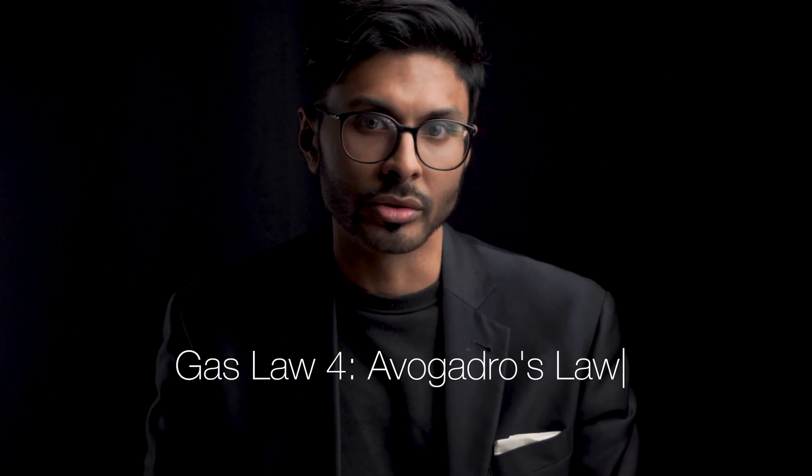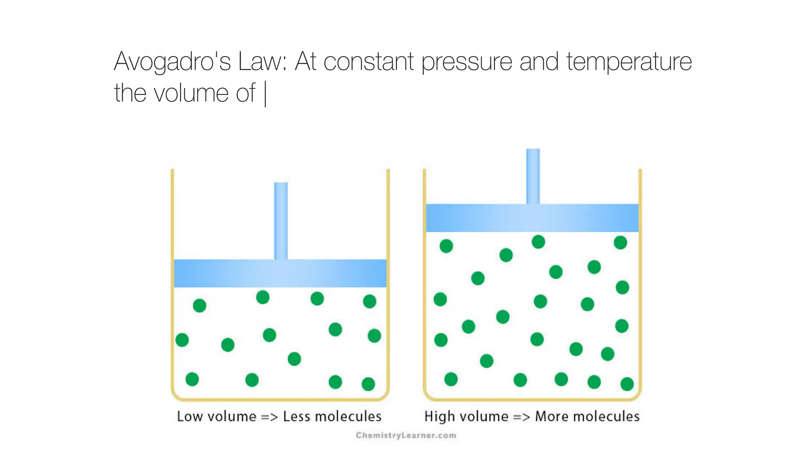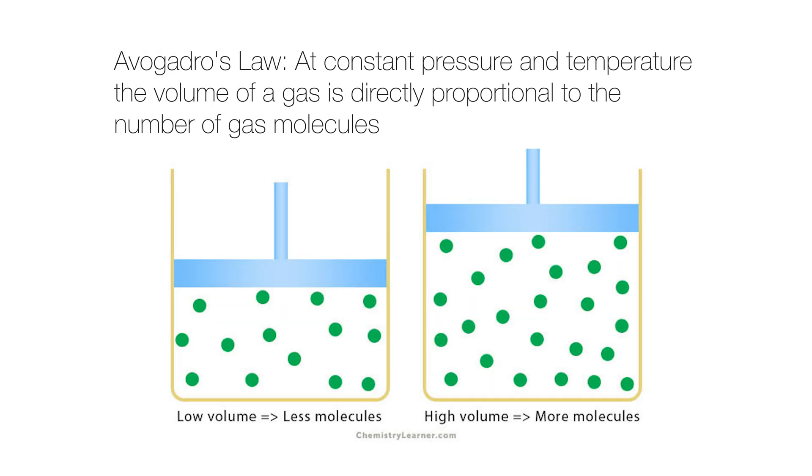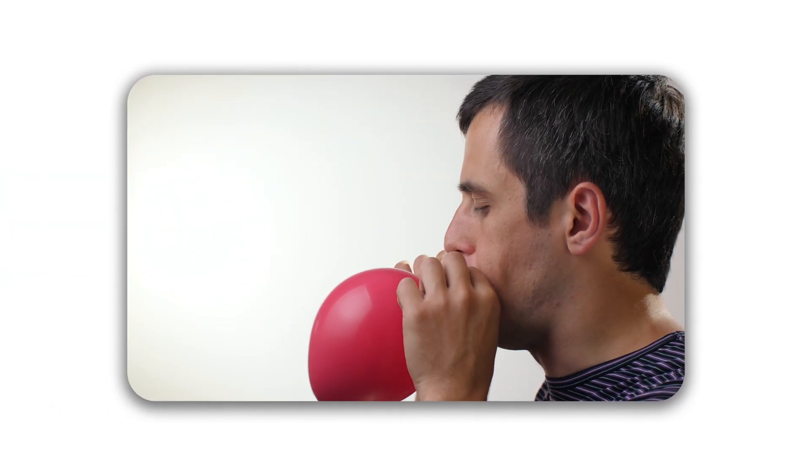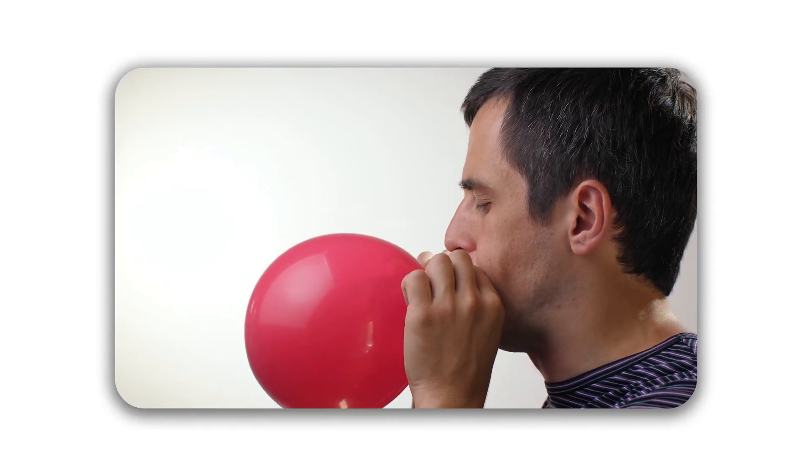The fourth law is Avogadro's Law, which relates volume and the number of gas molecules. At constant pressure and temperature, the volume of a gas is directly proportional to the number of molecules — add more gas molecules and you need a bigger container for the pressure to stay the same. Blow more air into a balloon and it expands while staying the same pressure. In the respiratory system, this explains how adding air increases lung volume during breathing in.